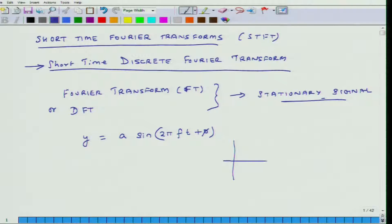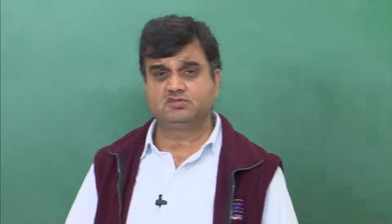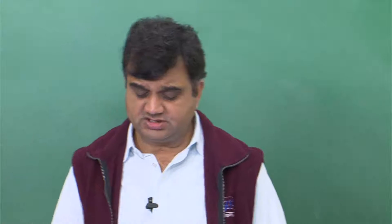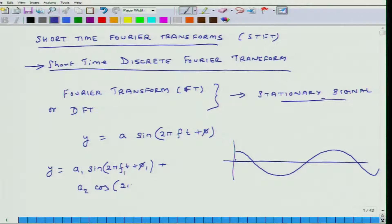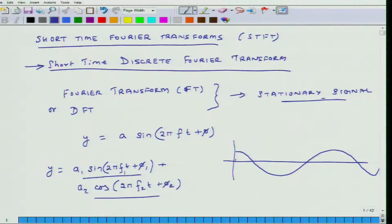This is a stationary signal. Why is it stationary? If I plot it, it is a phase, but the signal keeps on going forever and the nature of the signal does not change — it is a stationary signal. Another example: y equals a₁ sin(2πF₁t + φ₁) plus a₂ cos(2πF₂t + φ₂). This is also a stationary signal, because both these components of signal y are not changing over a period of time.